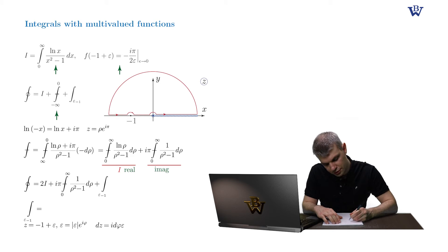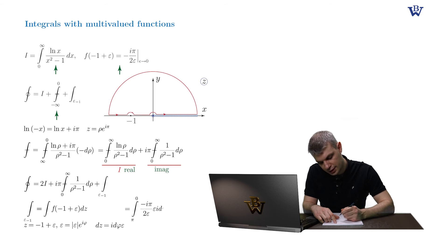So we have for this semicircular integral, the integral of f of negative one plus ε dz, which yields the integral from π to zero minus iπ over 2ε times ε i dφ. And taking the integral over φ, we have π squared by 2 with minus sign.